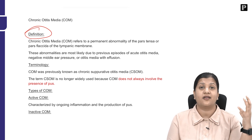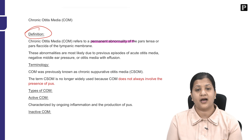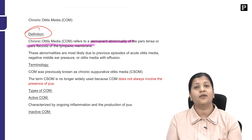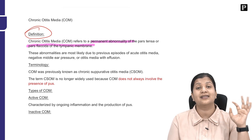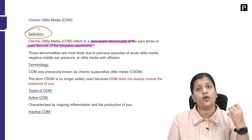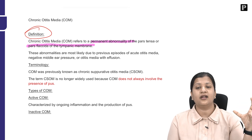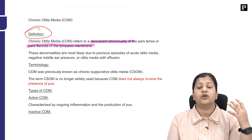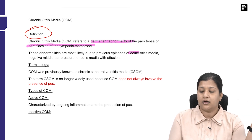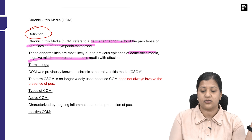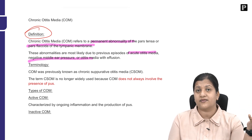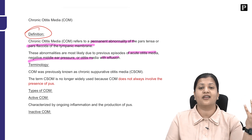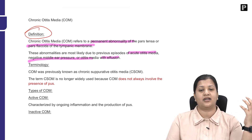Chronic otitis media refers to a permanent abnormality of the pars tensa or pars flaccida of the tympanic membrane. There is a permanent perforation, which could be in the pars tensa or pars flaccida. The abnormality is usually in the form of perforation; sometimes there can also be a retraction. It can occur due to previous acute otitis media, negative middle ear pressure from eustachian tube dysfunction, or chronic middle ear effusion.